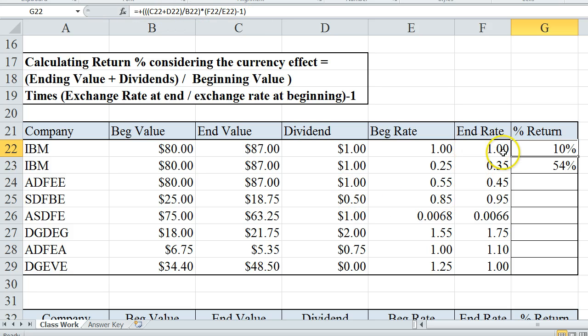So you can see here that we have a 10% return. However, if we have the same statistics of the beginning value, ending value, and dividend for IBM, and the beginning exchange rate is 0.25 and the ending exchange rate is 0.35, you see that the exchange rate increased. So we're going to get a 54% return just on this increase of the exchange rate. So if I leave the exchange rate at 0.25, it's still a 10% return. If I make it to 0.30, it's a 32% return.